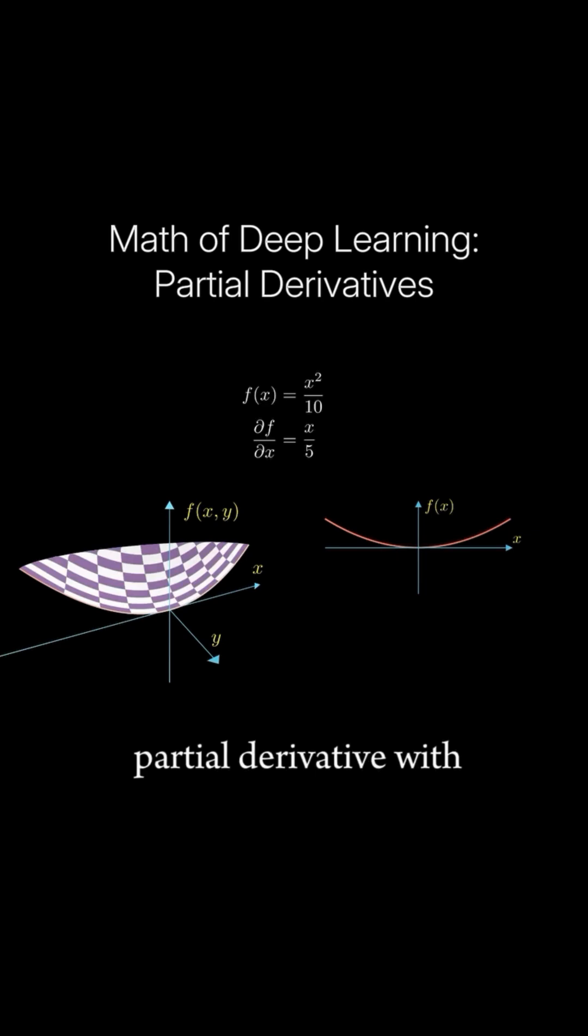To find the partial derivative with respect to y, we'll have to reverse the argument, fix x, and then differentiate f with respect to y.